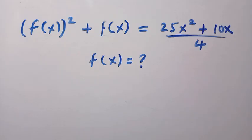How to solve this nice functional equation? We are given f(x) squared plus f(x) equals 25x squared plus 10x over 4, and we want to find f(x) here.